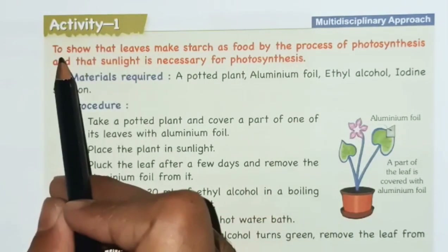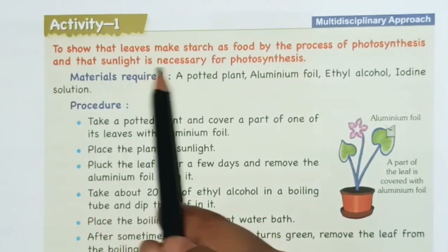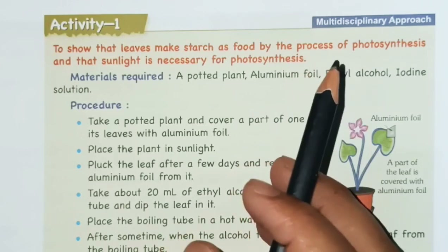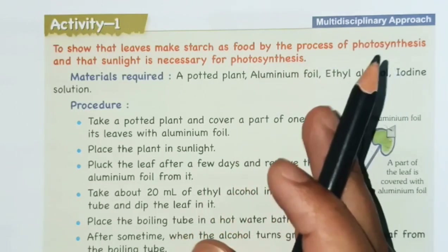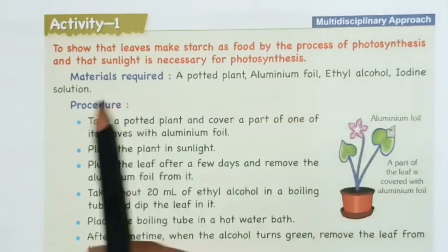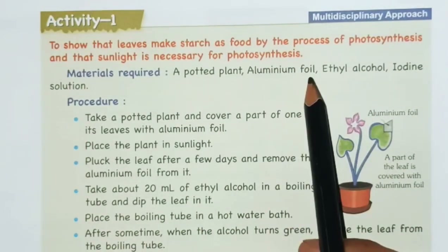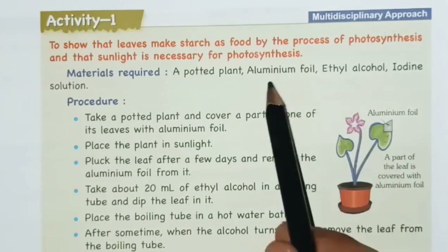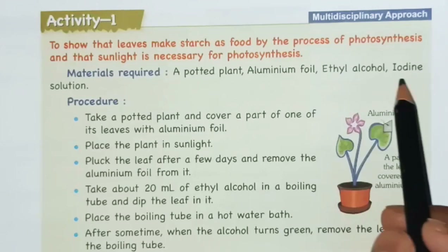Activity 1: To show that leaves make starch as food by the process of photosynthesis and that sunlight is necessary for photosynthesis. Materials required: a potted plant, aluminium foil, ethyl alcohol (ethanol), and iodine solution. Procedure: Take a potted plant and cover a part of one of its leaves with aluminium foil. Place the plant in sunlight. After a few days, pluck the leaf and remove the aluminium foil. Take about 20 ml of ethyl alcohol in a boiling tube (test tube) and dip the leaf in it.